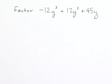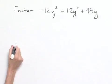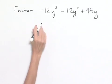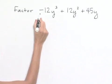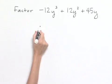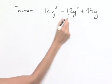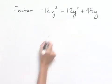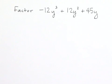Let's factor negative 12y cubed plus 12y squared plus 45y. We're going to begin by looking for our common factors. Because this leading term is negative, one thing we can do is factor out a negative value. We also note that we have a 12, a 12, and a 45 — there's a common factor of 3 with those three numbers.